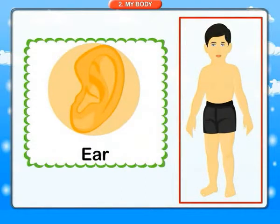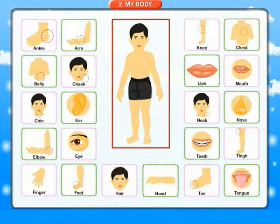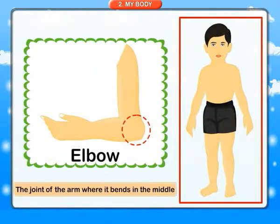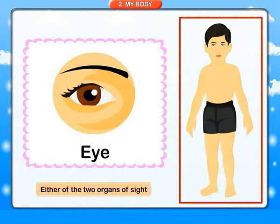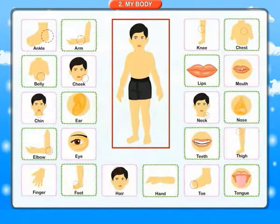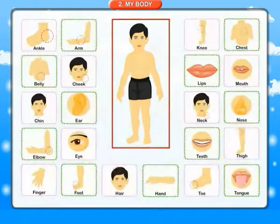Chin: the front of the lower jaw. Ear: either of the two organs on the sides of the head that you hear with. Elbow: the joint of the arm where it bends in the middle. Eye: either of the two organs of sight. Finger: any of the five parts at the end of each hand.